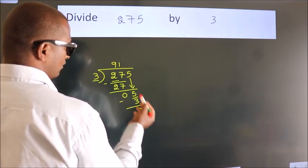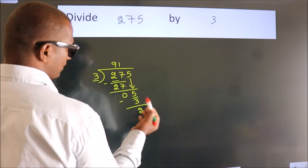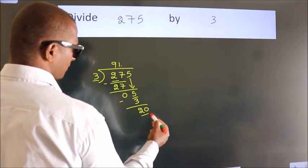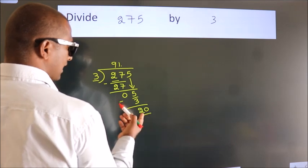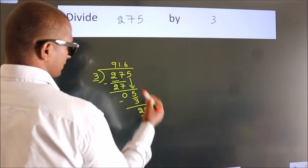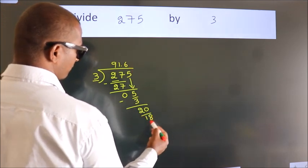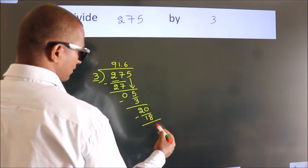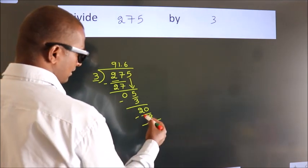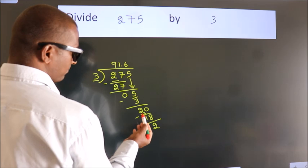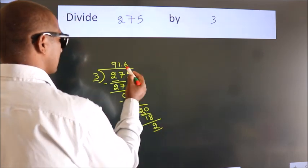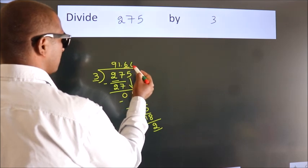After this, there are no more numbers to bring down. So what we do is put a dot and take 0 — so 20. A number close to 20 in the 3 table is 3, 6, 18. Now we subtract. We get 2. Now you observe — we had 2 here and we got 2 again. That means this number keeps on repeating.